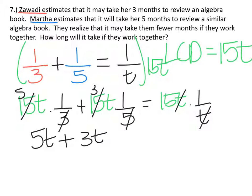15T times one-over-T, the T's will cancel and I'm left with 15. So we have 5T plus 3T equals 8T, and that's equal to 15.